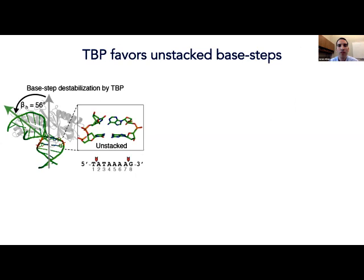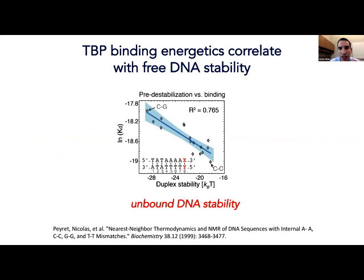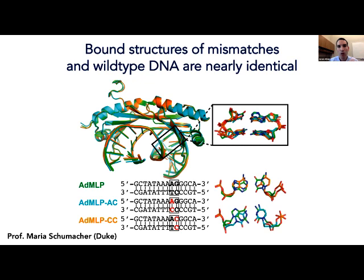We have a similar example with TBP. We also see that by destabilizing TBP and helping it bend, we can enhance binding in a similar manner. This was validated in collaboration with Maria Schumacher, where we crystallized the structure of a mismatch complex to confirm that we really mimic the bound structure, thereby saving the energetic cost to kink the DNA.